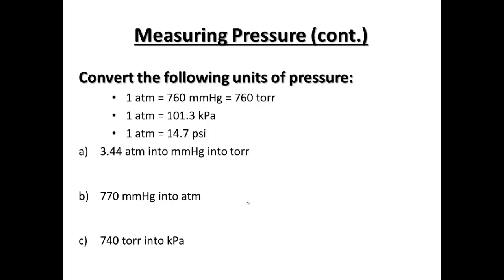Now we have those conversions to help us out. Our first one, 3.44 atmospheres into millimeters of mercury and into torr. If we started out 3.44 atmospheres, we want to set up so atmospheres can cancel, leaving us with millimeters of mercury. 1 atm equals 760 millimeters of mercury. That turns out to be about 2,614 millimeters of mercury, or that equals about the same number in torr.